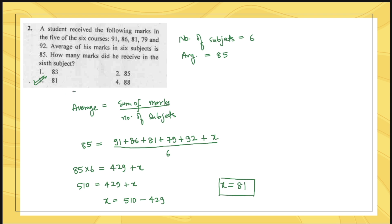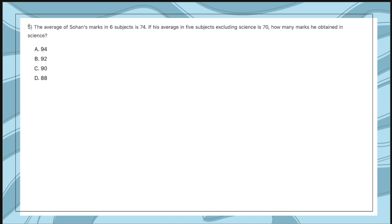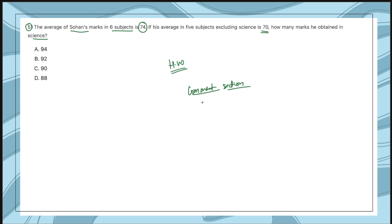It is a very simple question and this is how you have to approach it. Now I have taken a similar homework question: the average of Sohan's marks in six subjects is 74. If the average in five subjects excluding science is 70, how many marks did he obtain in science? Apply the same logic as the first question and answer in the comment section below.